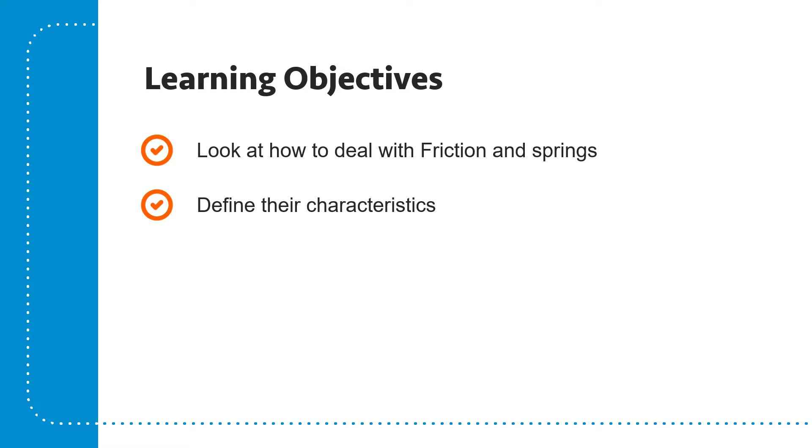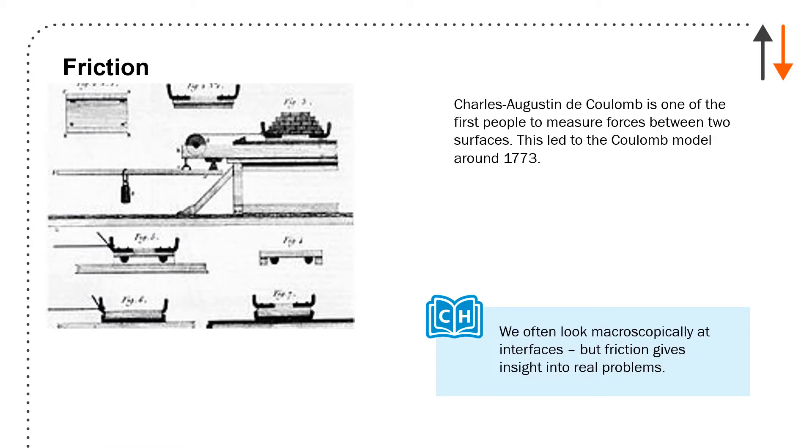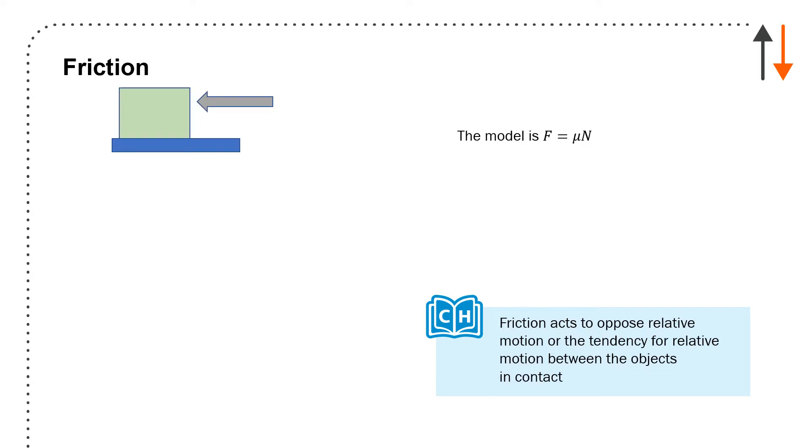First, we'll define friction and springs as used in this course and their characteristics. Charles Augustin de Coulomb was one of the first people to measure forces between two surfaces. You can see the complex device he developed - you can measure force, vary the tray, put wheels on it, add various types of weights and interfaces. One interesting thing is that we have a tendency in this course to look at things from the macroscopic point of view.